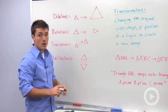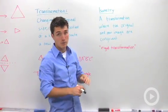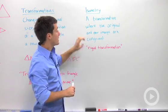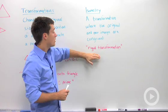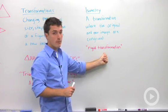Certain transformations are more specifically described and we call those isometries. An isometry is a transformation where the original shape and new image are congruent. Another way of saying this is to call it a rigid transformation.